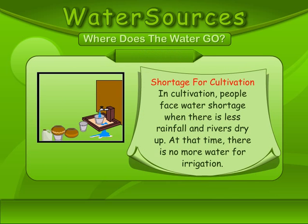Water shortage for cultivation. In cultivation, people face water shortage when there is less rainfall and rivers dry up. At that time, there is no more water for irrigation.